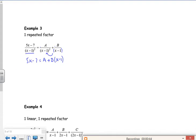So if I use x is 1, that leads to 5 lots of 1 minus 7 is A. So minus 2 is A.